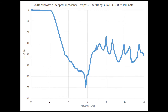From the frequency axis, you can see from zero to two gigahertz the low-pass filter has very low insertion loss — it's very flat and well behaved. That's because a Butterworth transfer function was used, which means you do not have ripple, and it's very low loss.